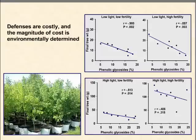Under conditions of low light–low fertility and low light–high fertility, we see a strong negative genetic correlation between tree weight and production of phenolic glycosides. But under conditions of high light and high fertility — when resources are abundant — that trend still exists but the significance breaks down. In other words, when resources are super abundant, the cost of production of these phenolic glycosides is minimized.